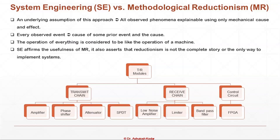The underlying assumption is that all observed phenomena are explainable using only mechanical cause and effect. Every observed event is a cause of some prior event. The operation of everything is considered like an operation of a machine. For example, a TR module will be divided into its components: transmit chain, receive chain, control circuit. The transmit chain is further divided into its constituent assemblies. If any problem happens, you can debug down to the lower level — for example, if power output is not as desired, go down to the transmit chain and then to the amplifier.